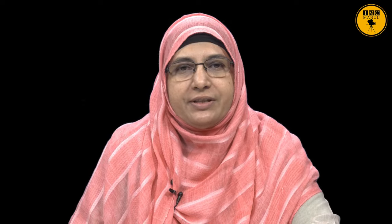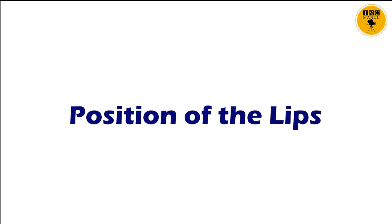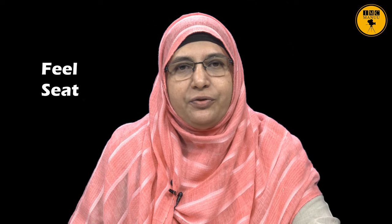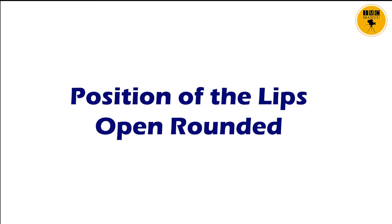We now come to the position of the lips. There are five positions. The first one on your screen is lips that are spread — this is the smiling position. The second position is lips that are open and rounded, as in words like 'caught', 'hot', 'got'. Pay attention to the vowel sounds in these words and see how the lips are placed.